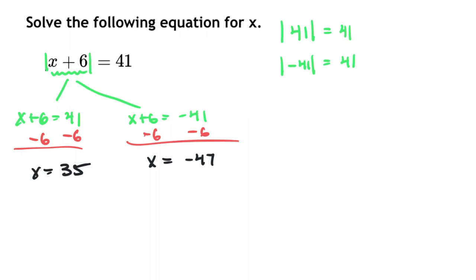And so, therefore, your two answers are x equals 35 and negative 47. Note that these values are not opposites. A lot of students sometimes just assume once they find 1, then you just automatically put negative 35.